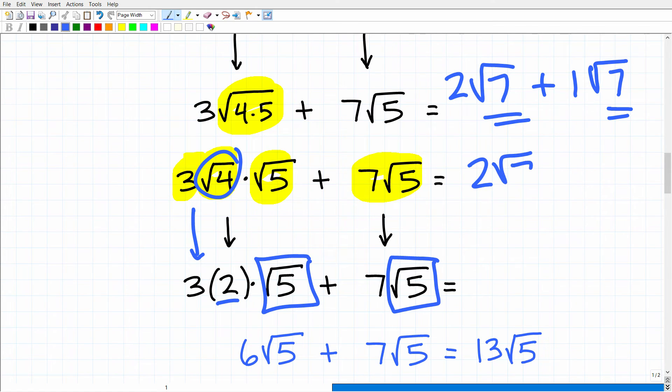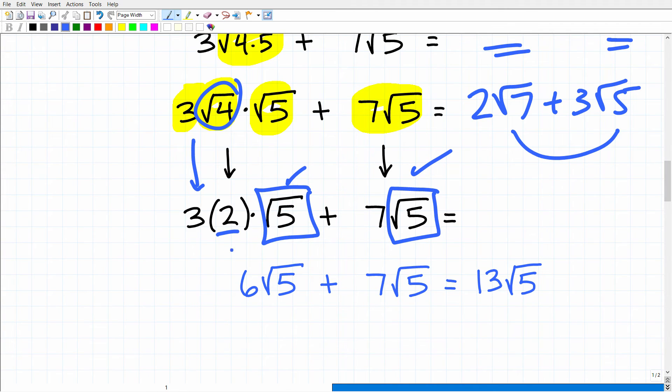Both of these terms have the square root of 7. But if I'm trying to add 2 square root of 7 to 3 square root of 5, I can't do this because the radicals are different. But in this case, we are dealing with the square root of 5. All right, so let's go ahead and proceed. So we have 3 times 2, which is 6 square root of 5 plus 7 square root of 5.